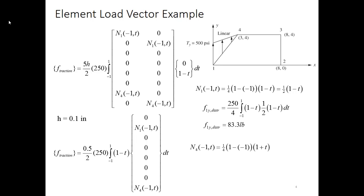When I evaluate n4 at negative 1 comma t, that becomes 1 half times 1 plus t. Putting that into the integral for that piece, I find 41.7 pounds. So these are the two non-zero force terms. At node 1, I have to apply 83.3 pounds upward. And at node 4, I apply 41.7 pounds upward. These two forces together form the static equivalent of the distributed load shown.